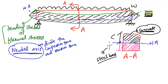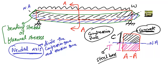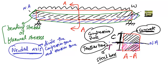Steel bars are provided in the tension zone to take the tensile stresses, while concrete is provided in the compression zone because of its high compressive strength. So there are three different terminologies used in beam behavior: the compression zone, the neutral axis, and the tension zone represented by T.